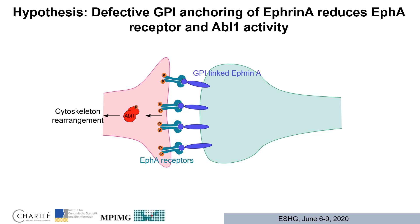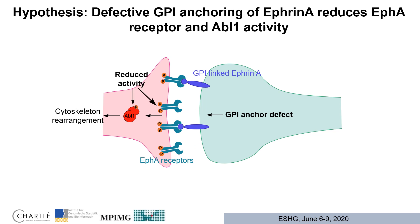Based on the mis-expression of ABL1, we proposed the following pathway mechanism in GPI-Anchor deficiency. ABL1 plays a crucial role in the Ephrin-R signaling pathway. Ephrin-R, a GPI-linked protein, activates Ephrin-R receptors at synaptic connections through phosphorylation, which in turn activates ABL1 through phosphorylation, with further consequences on cytoskeleton rearrangement. GPI-Anchor deficiency leads to a reduced number of GPI-linked Ephrin-R on the synapse surface, reducing activity of Ephrin-R receptors and ABL1. We propose a feedback loop leading to down-regulation of the ABL1 gene, reduced ABL1 transcripts, reduced ABL1 protein expression, and subsequent consequences on cytoskeleton rearrangement, synapse structure, and synaptic transmission.